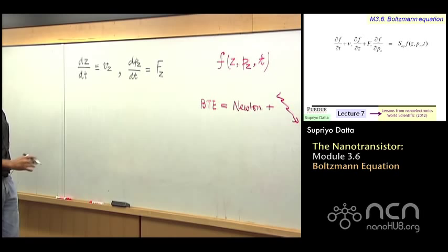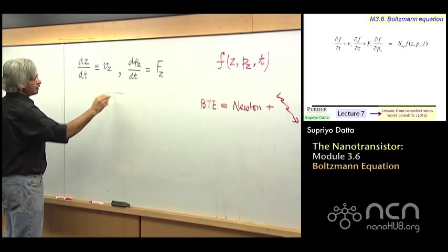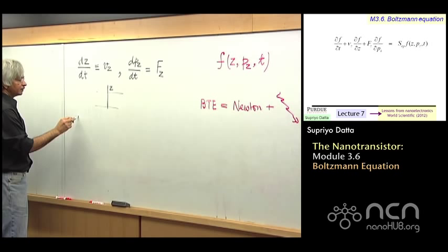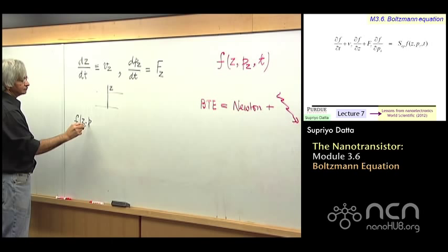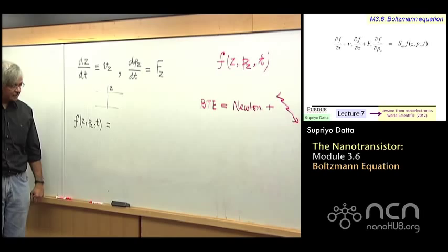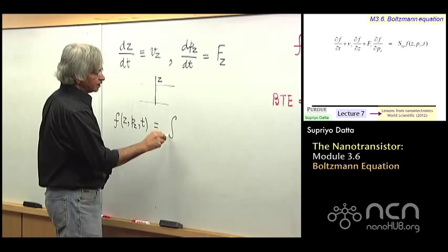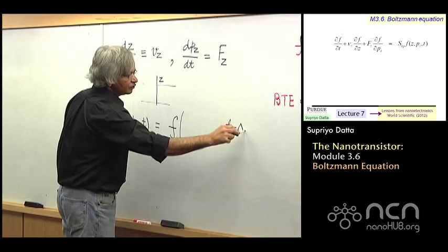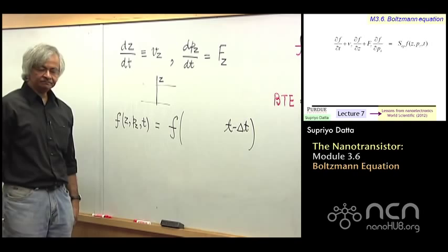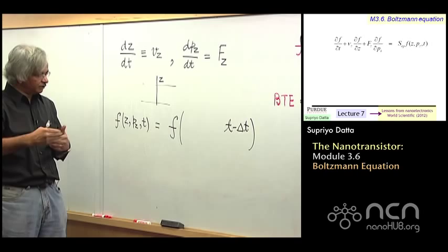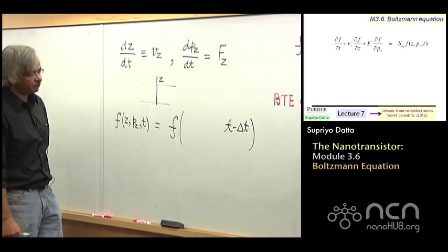Now, the question is that if you are looking at a particular point, so supposing I have this device, and you're looking at some point z, and we're writing the number of electrons at that point with a certain momentum at a given time. Now what we can say is that any electron that happens to be at this location was actually at a different location a little bit of time earlier, so if you had looked at the time at t minus delta t, it would have been at a different location z, because it was traveling with a certain velocity, and so it appeared here.